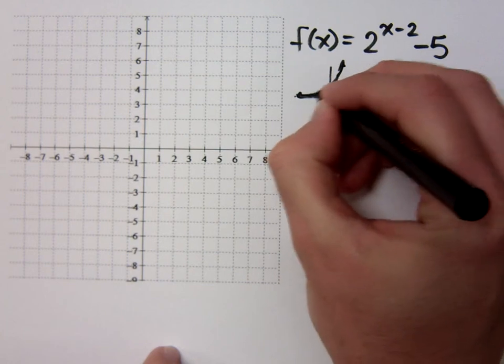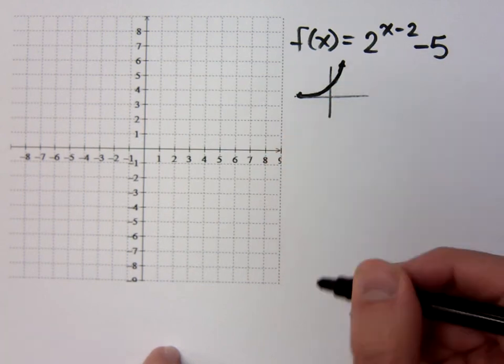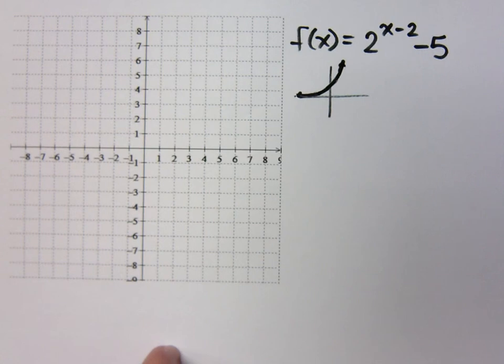It should be flat on one end and it should just get crazy out of control on the other hand. That's my exponential shape.